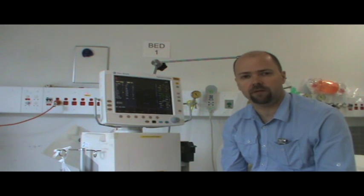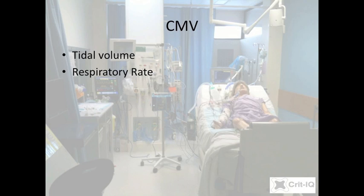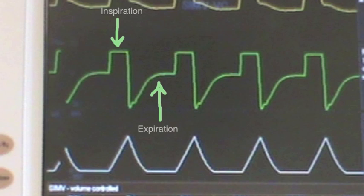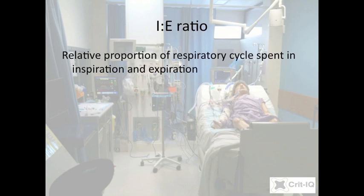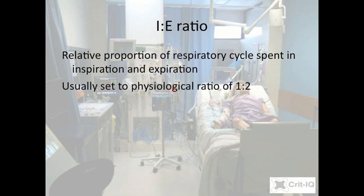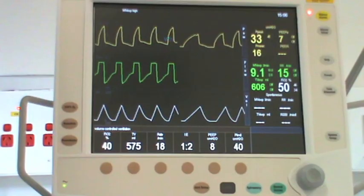The simplest mode of mechanical ventilation to understand is controlled mandatory ventilation, or CMV. This is a volume-regulated mode involving a fixed volume of gas delivered at a fixed frequency known as the respiratory rate. Once the ventilator has delivered the fixed volume, it opens its valves and allows passive exhalation to occur. The relative time spent in inspiration and expiration is set by the IE, or inspiration-expiration ratio, defaulting to roughly normal human physiology — a ratio of 1 to 2 or 1 to 3.